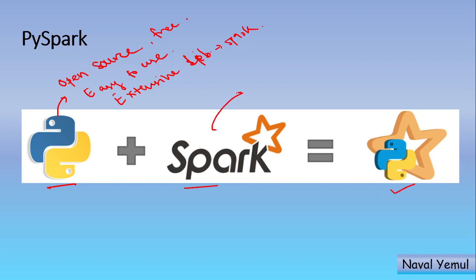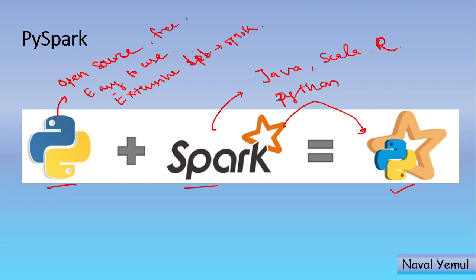Spark supports all high-level APIs — it supports Java, Scala, and R programming language as well. But we are going to refer mainly to Python. So if you are an expert in any of the programming languages, you can choose that with Spark. But we are taking Python with Spark, and that's why we are taking our course further with PySpark.